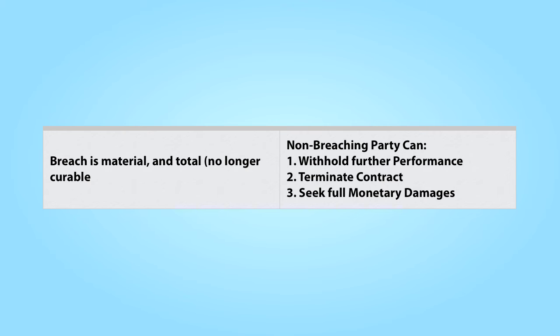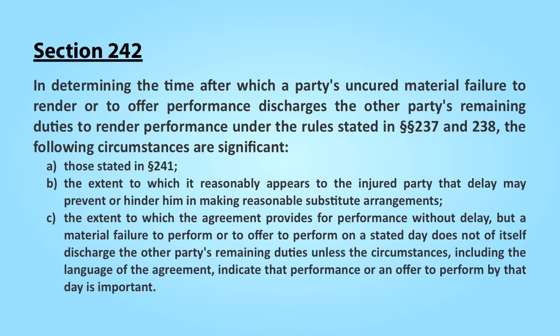If one party materially breaches a contract and can no longer cure the breach, then the non-breaching party is not only relieved of future performance obligations, it also can terminate the contract and sue for its entire monetary loss, including expectation damages. Section 242 of the Restatement sets forth circumstances relevant to determining when there has been a total breach, such that the non-breaching party can walk away from the contract. In addition to considering the factors related to when a breach is material, Section 242 looks to whether a further delay in not terminating the contract will prejudice the non-breaching party in finding substitute arrangements.